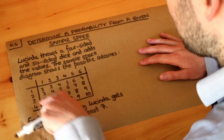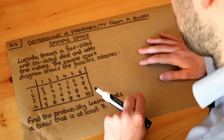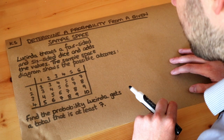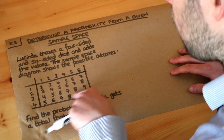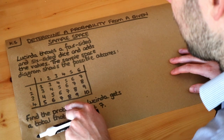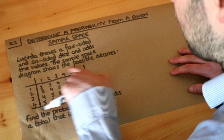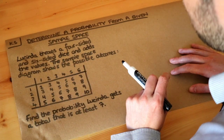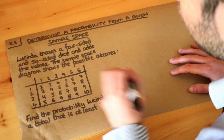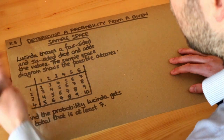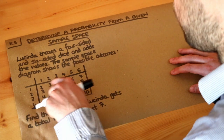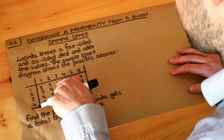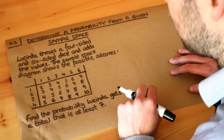This sample space diagram shows all the combined possible outcomes we might get, and we want to find the probability Lucinda gets a total that is at least seven. Using this diagram, how many total possibilities are there? If there are six possible outcomes from one dice and four possible outcomes from the other dice, you times those numbers together to get the total number of possibilities. Six times four is 24. Indeed, if you count all the numbers in the table — excluding the header and column labels — you'll get 24 different possible outcomes.